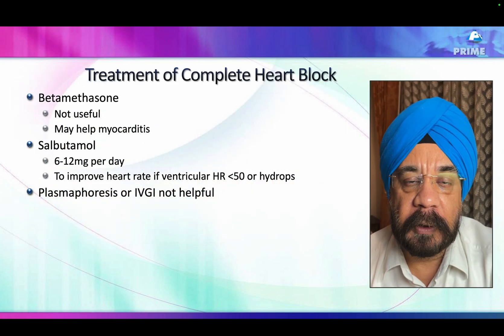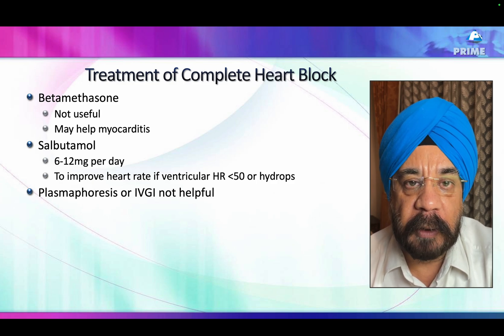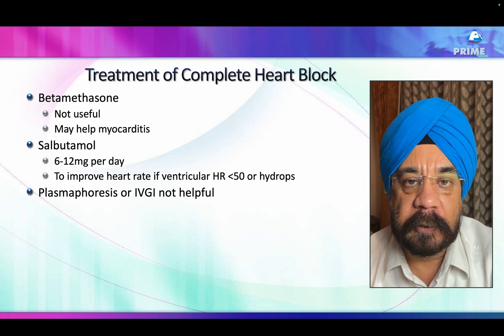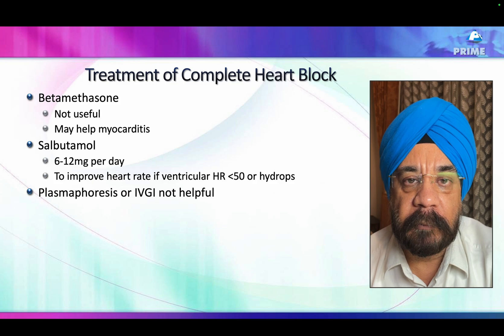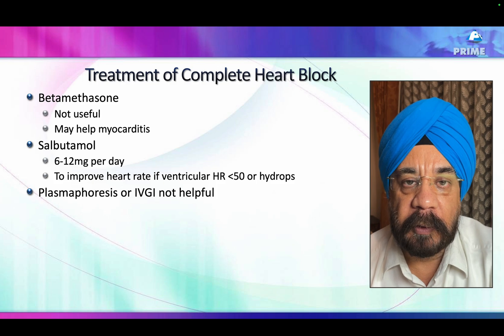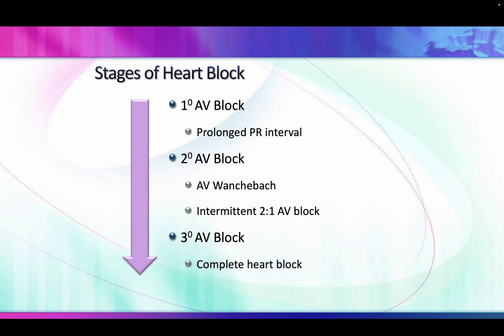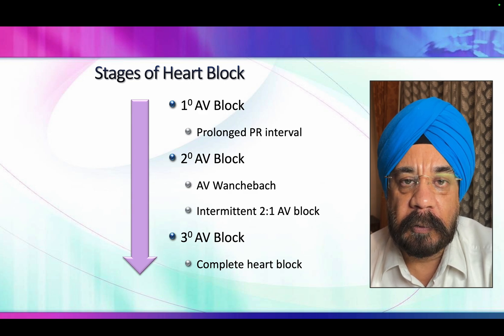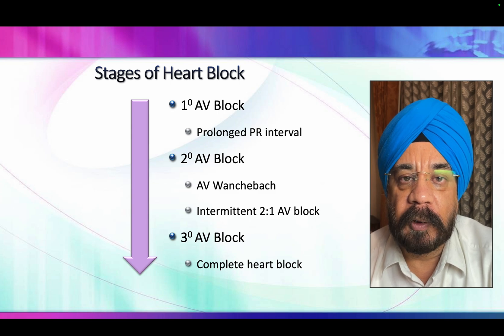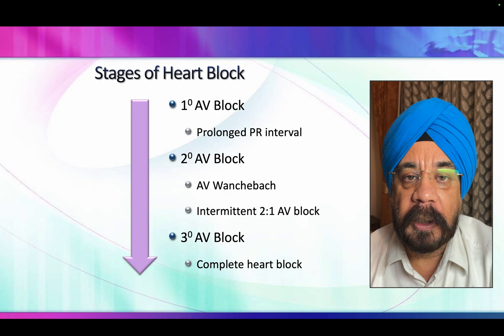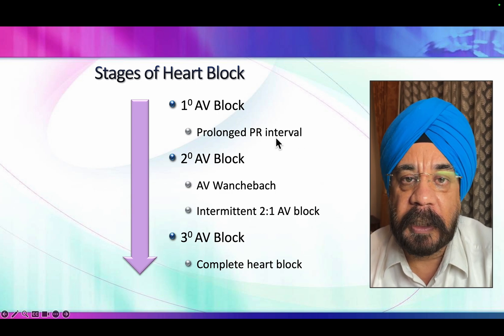Once complete heart block develops, steroids are not effective. Salbutamol can be given to maintain heart rate, but at the risk of ventricular arrhythmias. Therefore, the key goal is to prevent complete heart block from developing in the first place. Steroids can be given when PR interval prolongation is first detected — at the stage of first or second degree block — to prevent progression to complete heart block. Once you recognize a PR interval prolongation, that is the time steroids are most effective.